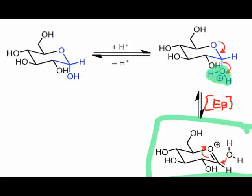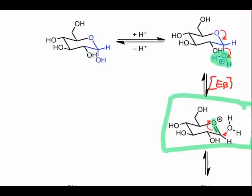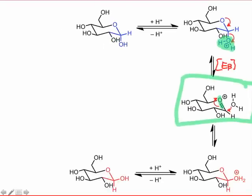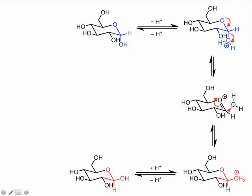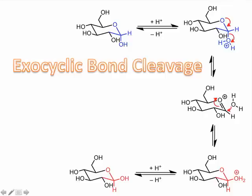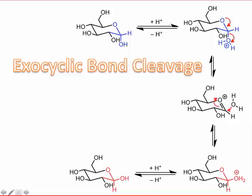Notice that although we can draw a carbocationic resonance form for this molecule, it's nicely stabilized by the adjacent oxygen atom. Additionally, its two faces are diastereotopic, and we can imagine attack on either face to form the alpha or beta-anomers. We refer to this as the exocyclic bond cleavage pathway because the carbon-oxygen bond that breaks is external to the ring.